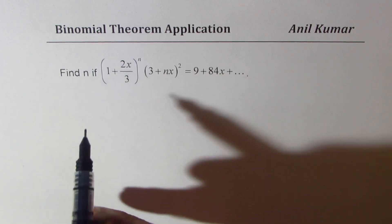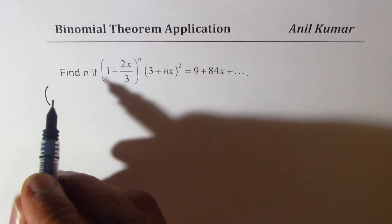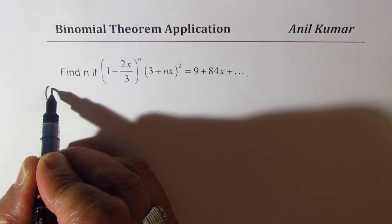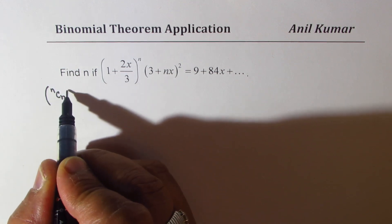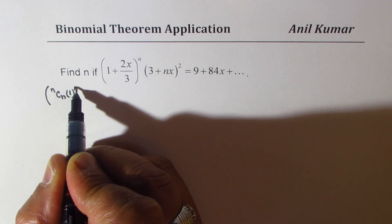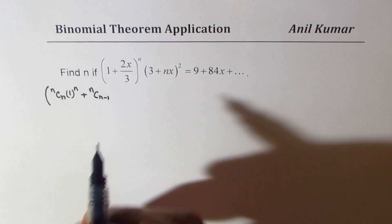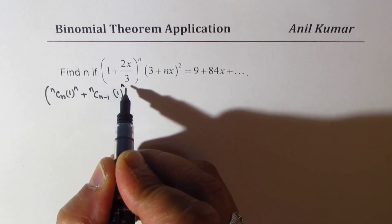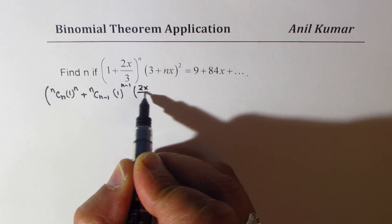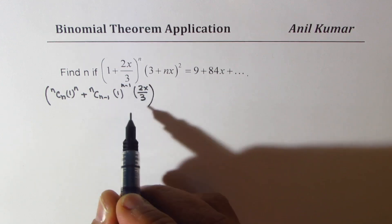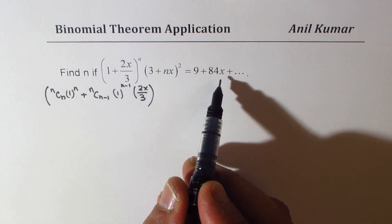We could write the first expansion as nC0, 1 to the power of n, plus nC(n-1), 1 to the power of (n-1) times 2x over 3. Now we are not going further since we'll get x square.